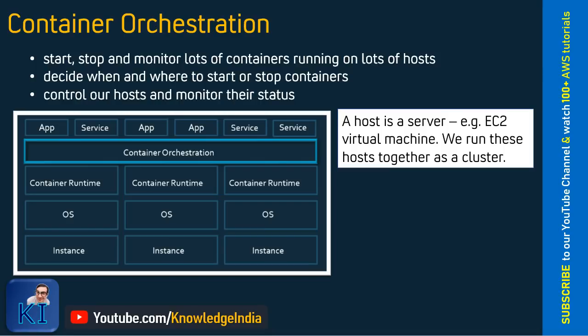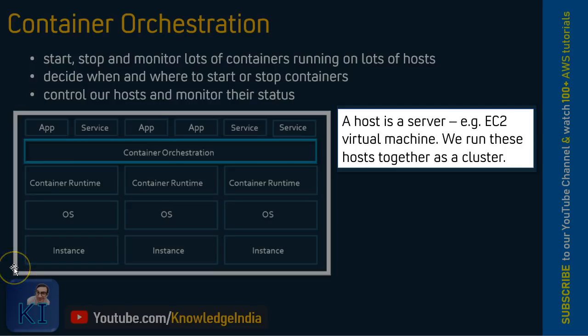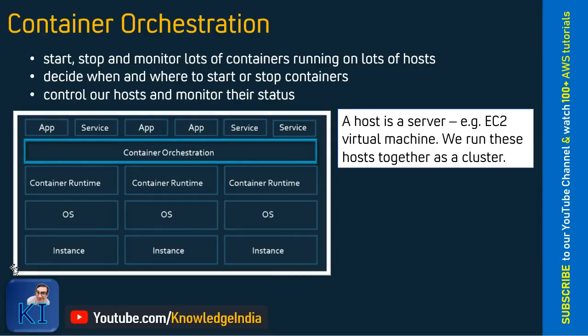So what do they actually do? They start, stop, and monitor all these containers which are running on so many hosts. What is a host here? A host is nothing but a server — it could be a physical server or a virtual machine. In the context of AWS, we will restrict our discussion to a virtual machine, so basically your EC2 instance. Container orchestration service, which is ECS in this case, manages, decides, and monitors which container should be running on which EC2 instance or which host.